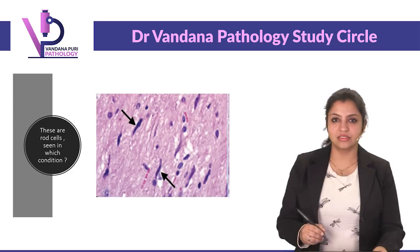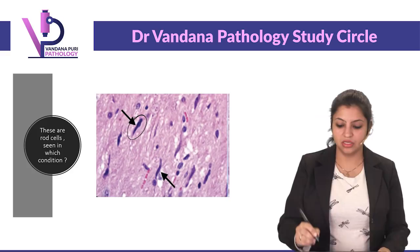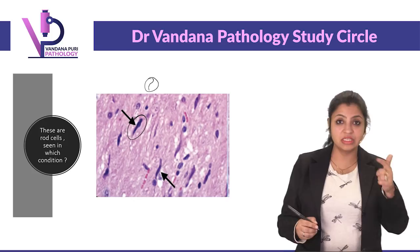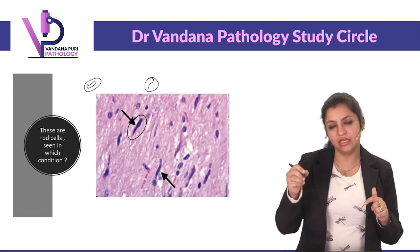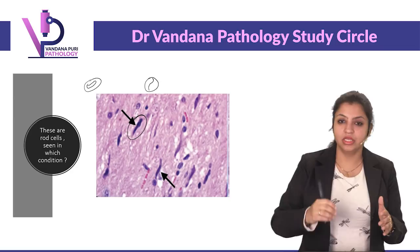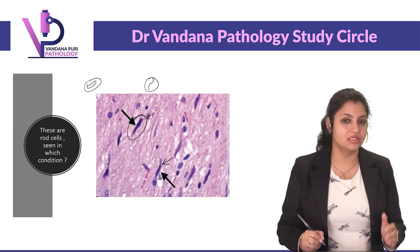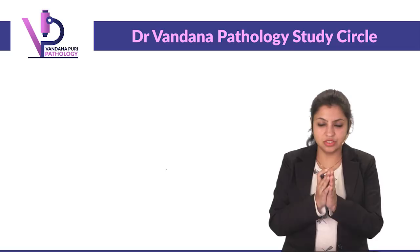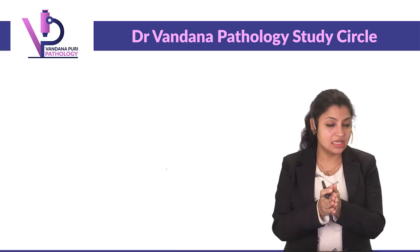Very elongated cells in histology are rod cells — they are modified microglia cells. Microglia cells already have slightly elongated nuclei, but when activated maximally they become very elongated, forming rod cells. Rod cells are seen in syphilis — this is something you should all remember.